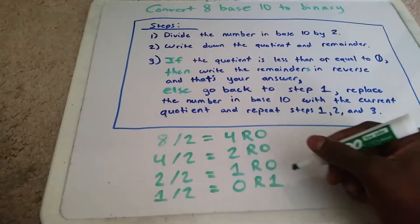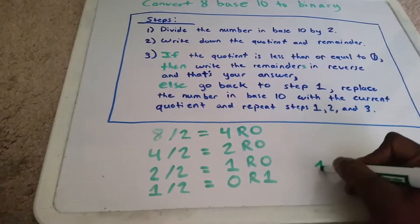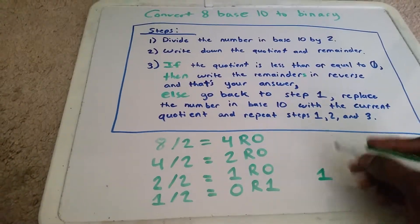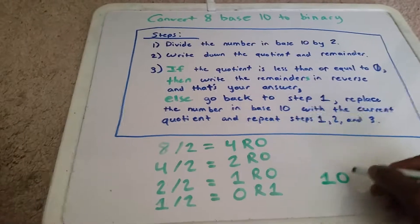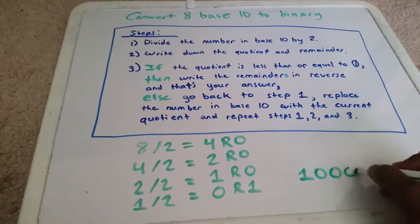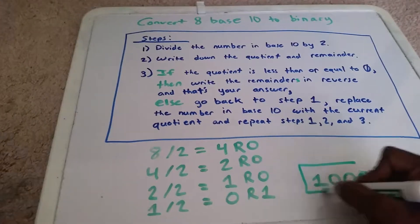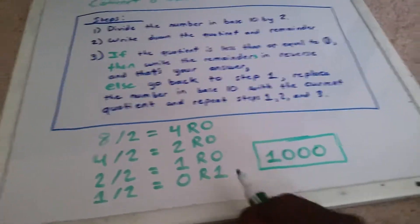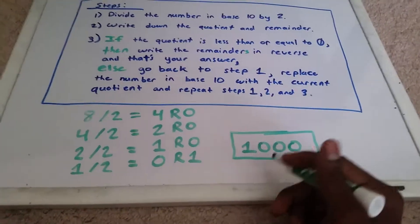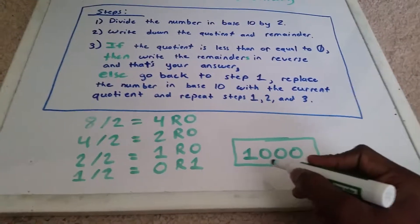Here are all of our remainders. Writing them in reverse, I start with the 1, then the 0, then the 0, then the 0. This gives us 1000, and this is my answer. So this is the number 8 in base 2, also known as binary.